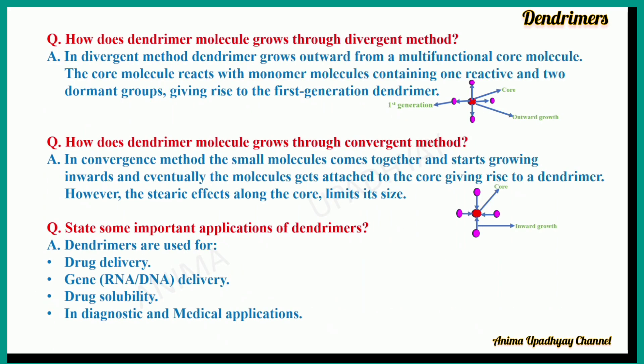How does a dendrimer molecule grow through the divergent method? To help you understand the divergent method, I have drawn a figure where the arrows are pointing outwards from the core. In the divergent method, the dendrimer grows outward from a multifunctional core molecule. The core molecule reacts with monomer molecules containing one reactive and two dormant groups, giving rise to the first generation dendrimer, as shown in the figure.